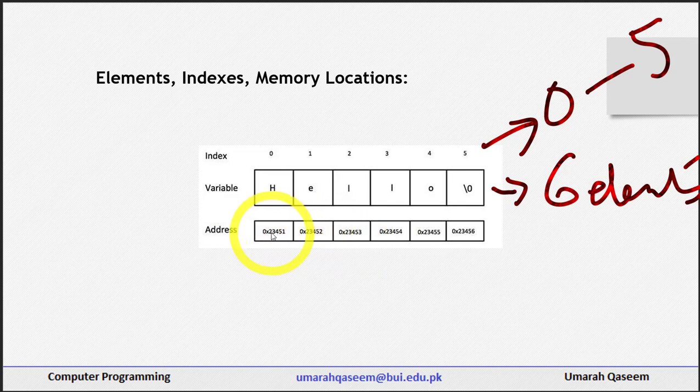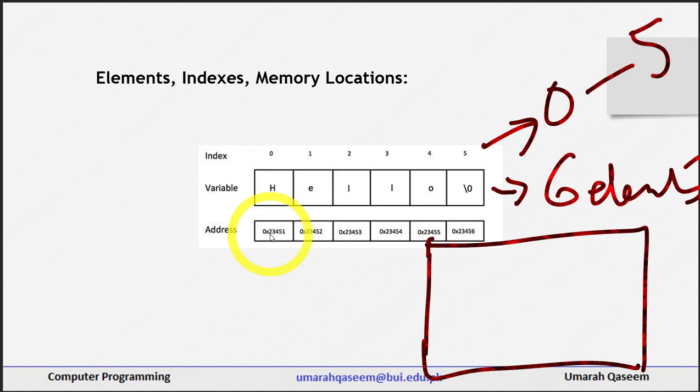So let's say this is your RAM. If these were different variables—this was not an array, these were six different variables—they would have been stored at random locations, maybe like this, somewhere in the RAM at random locations.